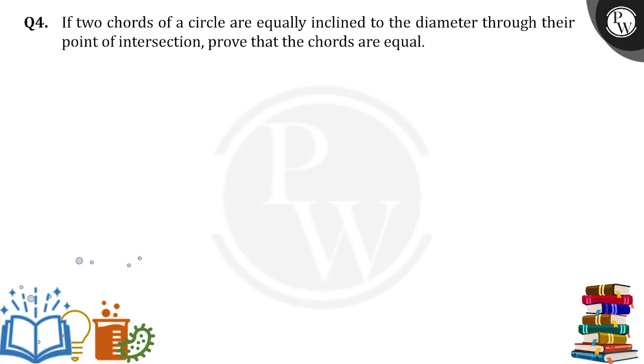Hello everyone, two chords of a circle are equally inclined to the diameter through their point of intersection. Prove that the chords are equal.